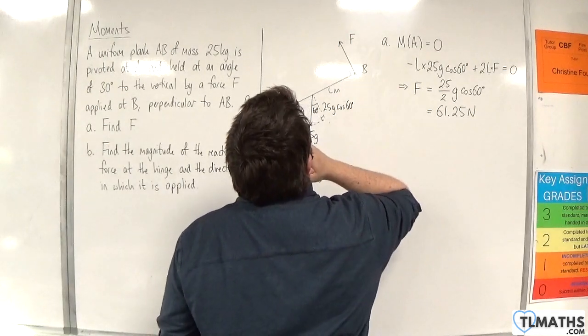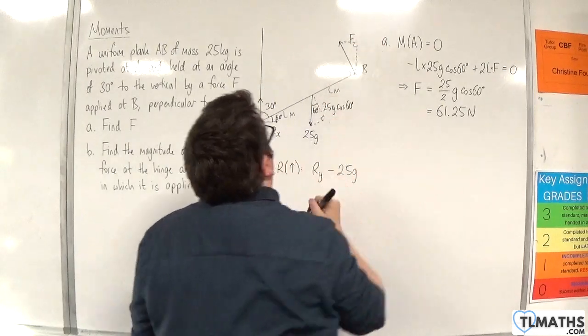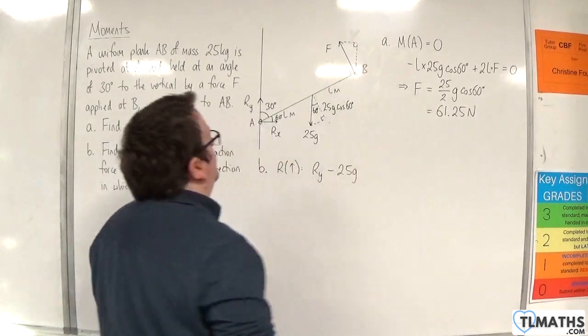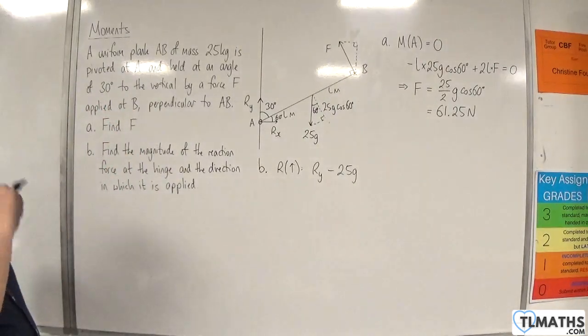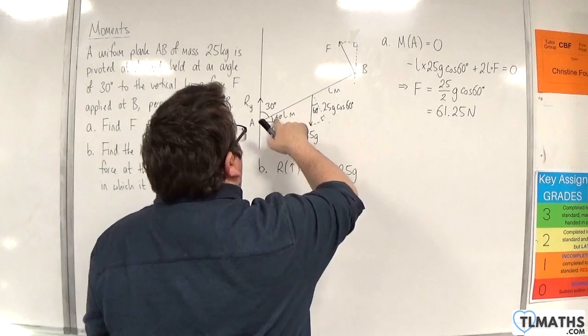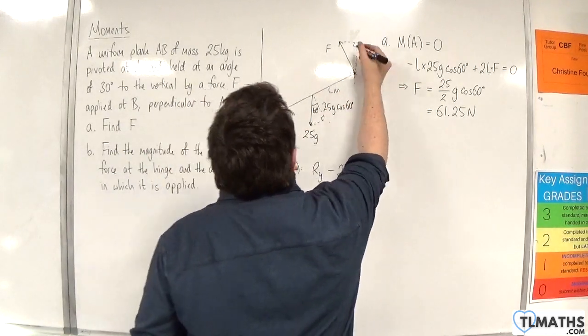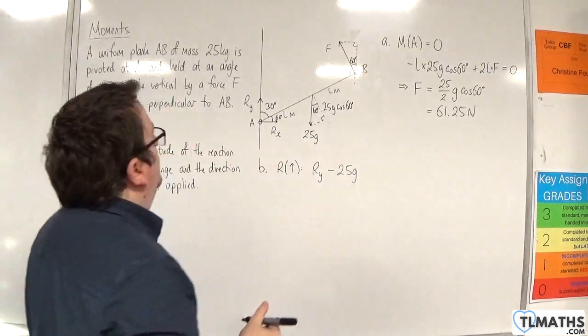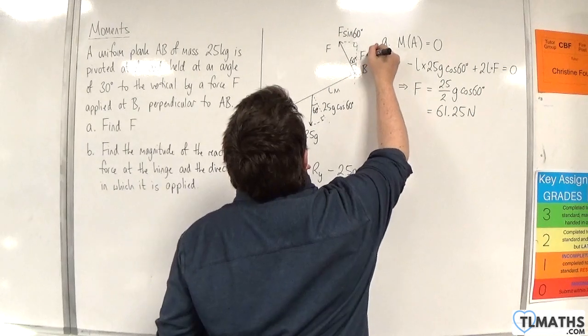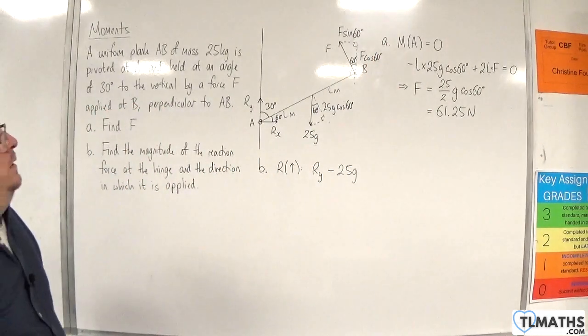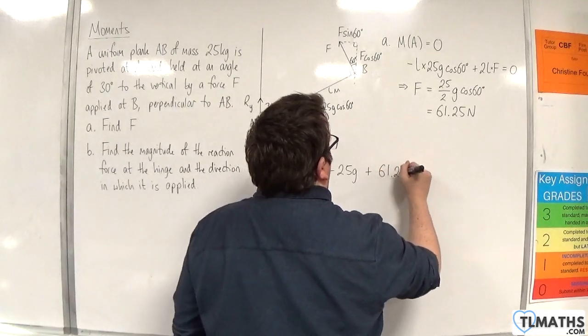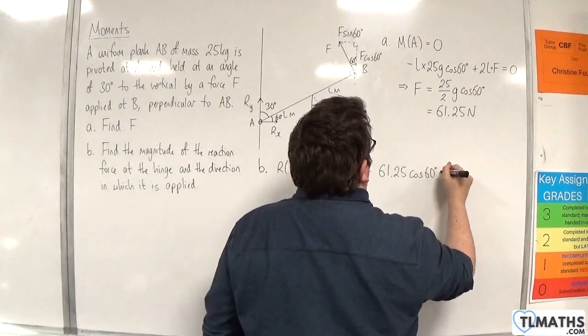Let's split that up. What is this angle going to be? That angle there, if you think about the big right angle triangle, that's going to be 30. So that means that angle is going to have to be 60. This is F sine 60 and this is F cosine 60. If I'm resolving vertically, then I need to add on F cosine 60, so 61.25 cosine 60, and that's going to equal 0.